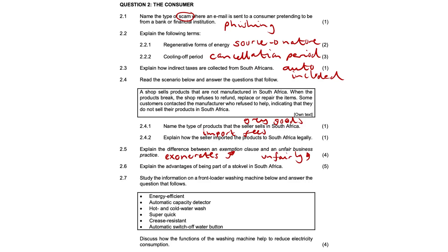2.6, explain the advantages of being part of a stokvel in South Africa. A stokvel is legal because all members know how the money will be invested. It is a form of saving investment — a way of forcing or committing members to put away money each month with future benefits. All members are aware of the payout dates when the benefits will be received, and all members agree on the risks they are expected to take. It's a good way of saving money, perfectly legal, and you earn a bit of interest — getting more money back than you actually invested.